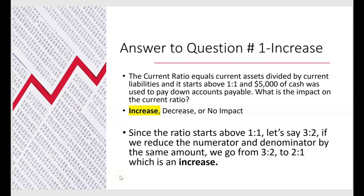Notice it doesn't matter whether it's the current ratio, the acid test ratio, the capex ratio, or the inventory turnover ratio — if you're starting above one to one and you take away the same amount from both numerator and denominator, the ratio will increase. We took away the same amount because five thousand dollars of cash was used to pay down accounts payable: cash, the numerator, goes down; accounts payable, the denominator, goes down by the same amount. Starting at three to two and reducing by one on each side takes us to two to one — an increase.